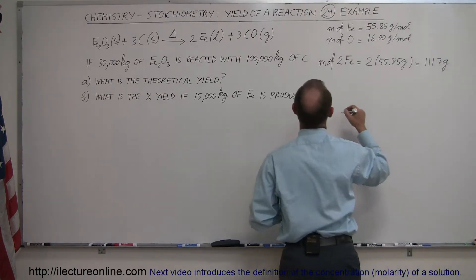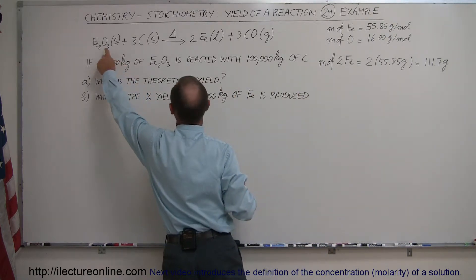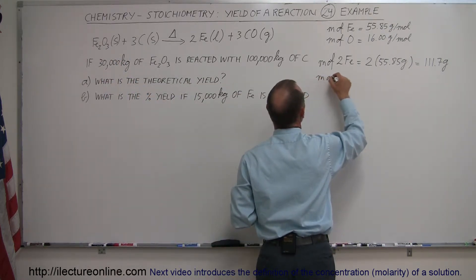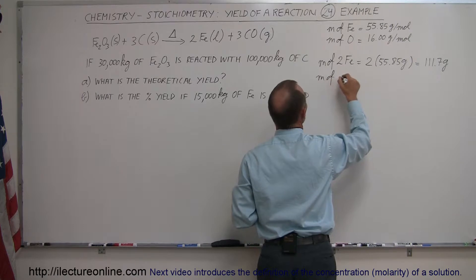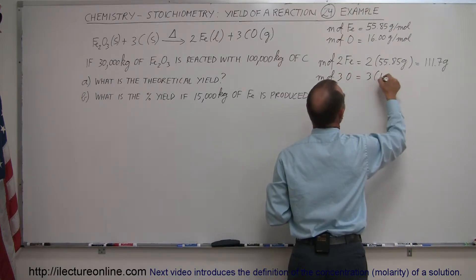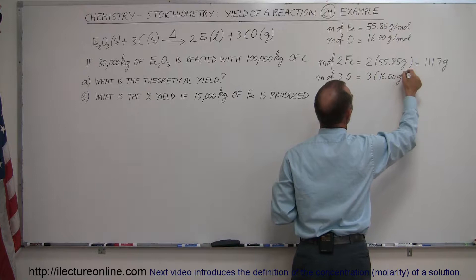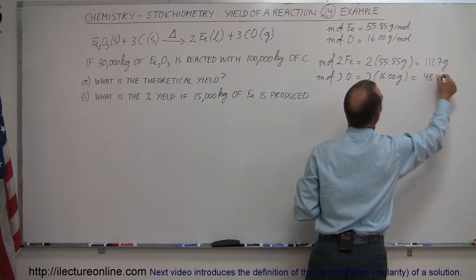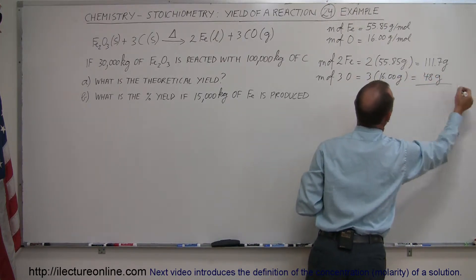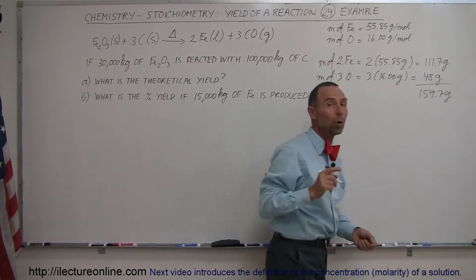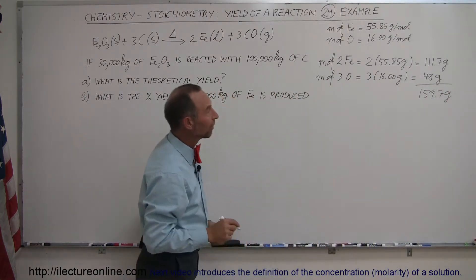Then for oxygen — there are three oxygen atoms in iron oxide — so we have three moles of oxygen. The mass of three oxygens is 3 × 16 grams, which gives us 48 grams. Adding everything together: 111.7 + 48 = 159.7 grams for one mole of iron oxide.